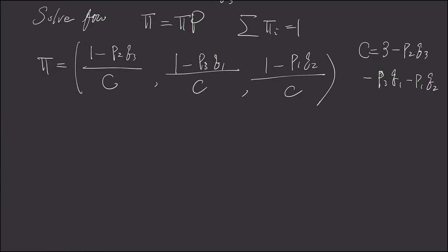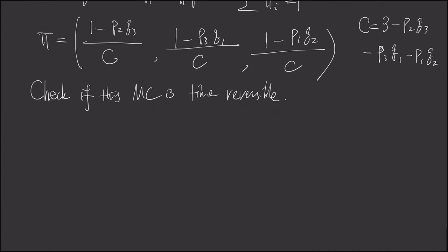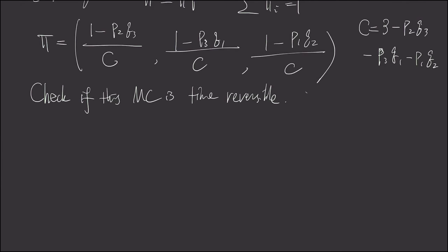However, if we want to check if this Markov chain is time-reversible, we will encounter a problem. Let's write down the time-reversible Markov chain. This equation must be satisfied, that is, the possibility of a full stationary Markov chain, the possibility of jumping from i to j the same as the probability of a transition from j to i.